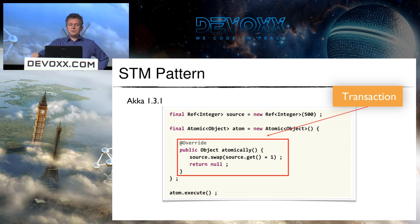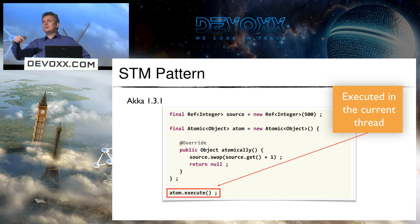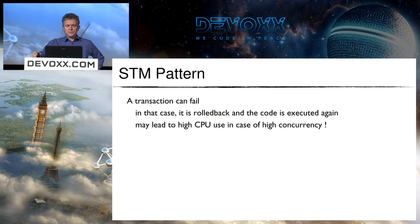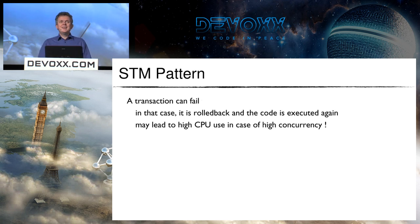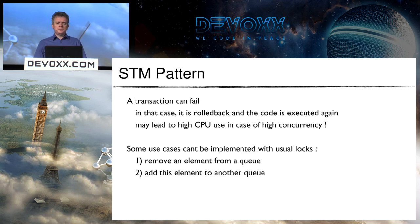The block in red is executed inside the transaction. The atom.execute() runs in the current thread, though it doesn't have to. If a transaction fails because the expected value was not what was anticipated, the transaction is rolled back and the code is executed again — exactly like the increment-and-get pattern with AtomicInteger. This may lead to high CPU use under high concurrency, unlike the synchronized pattern.